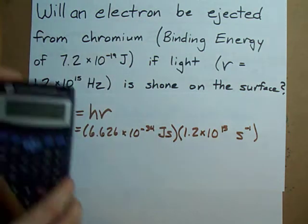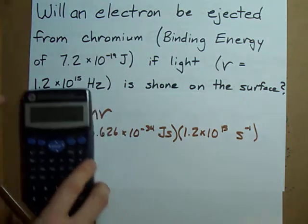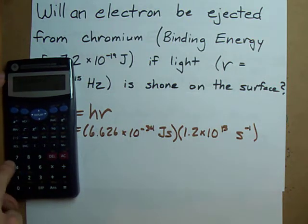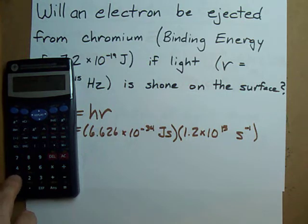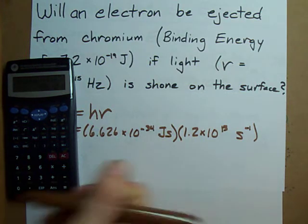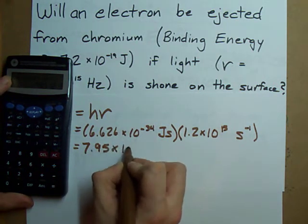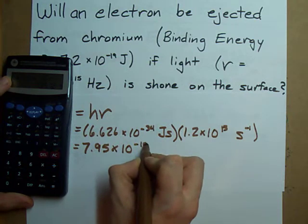If we do that on our calculator, we get 6.626 times 10 to the power of negative 34 times 1.2 times 10 to the power of 15. I get 7.95 times 10 to the power of negative 19.